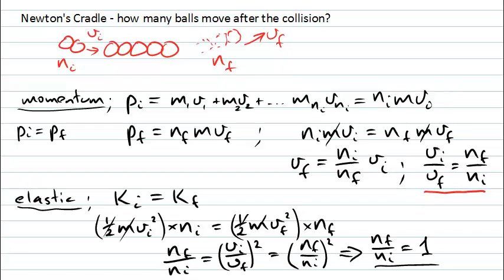Momentum conservation by itself doesn't tell us how many objects are moving, simply the relationship between the velocities and the numbers. But if we also have kinetic energy conservation, then the number that leave the collision must always equal the number that arrived before the collision.